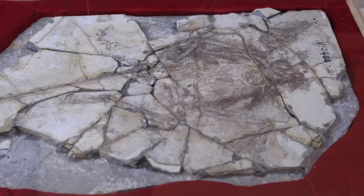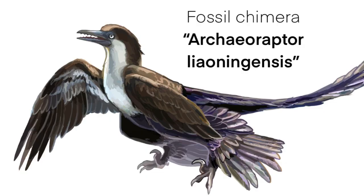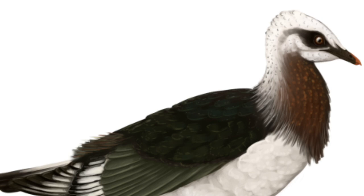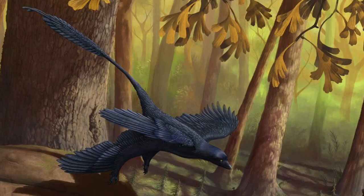Archaeoraptor. This is the informal generic name for a fossil chimera from China in an article published in National Geographic magazine in 1999. The magazine claimed the fossil was a missing link between birds and terrestrial theropod dinosaurs. However, there had been severe doubts about the fossil's authenticity. Studies showed different parts of the fossil belonged to different animals: the head and upper body belonged to a primitive bird called Yanornis, and the tail belonged to the four-winged dromaeosaurid Microraptor. The owner of the legs and feet is still unknown.